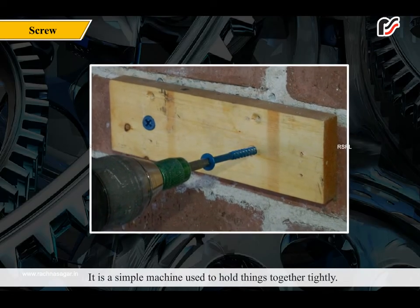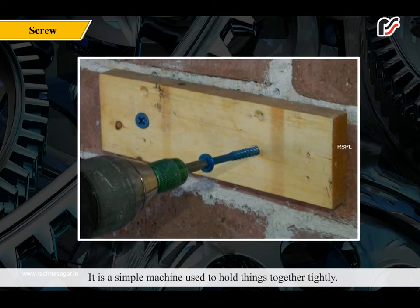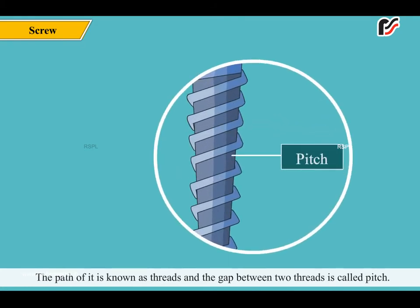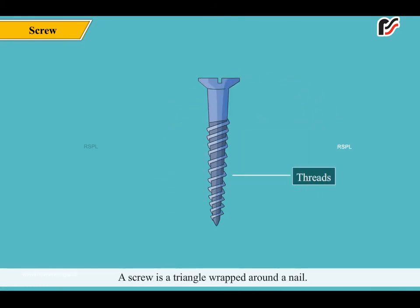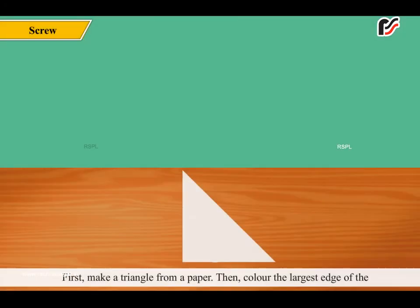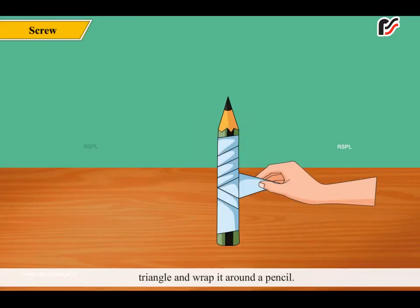A screw is a simple machine used to hold things together tightly. The path of the screw is known as threads, and the gap between two threads is called pitch. A screw is a triangle wrapped around a nail. You can do a simple experiment: make a triangle from paper, color the largest edge of the triangle, and wrap it around a pencil. The coils appearing on the pencil are exactly the same as those on a screw.